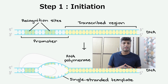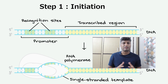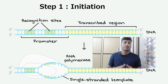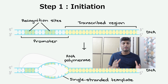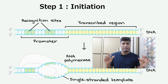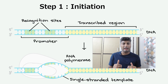This particular process of transcription consists of three basic steps. Step number one is called initiation. The word initiation itself means the start. In this particular diagram, you can see that DNA is present in the form of two strands. One of the enzymes which helps in the formation of RNA from DNA is called RNA polymerase.